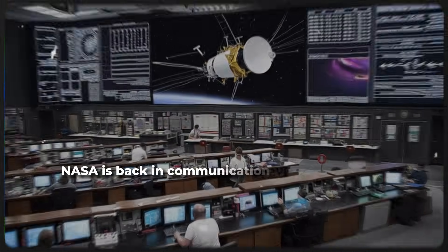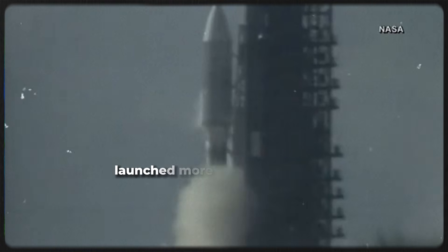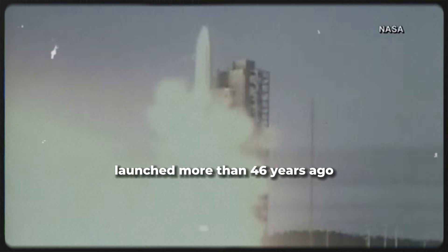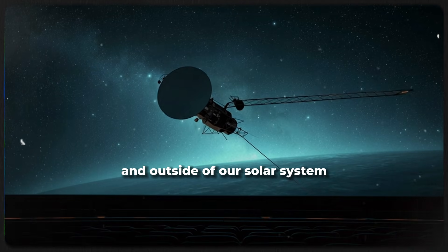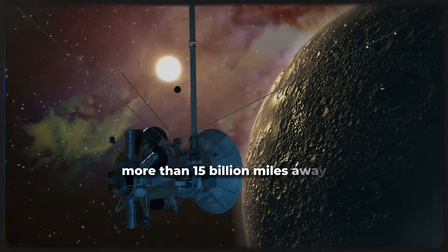First though, NASA is back in communication with a spacecraft that's unimaginably far away. Launched more than 46 years ago, Voyager 1 is now beyond the dwarf planet Pluto and outside of our solar system more than 15 billion miles away. Thirty-six years ago it made it beyond the solar system, the first human-made object to do so.